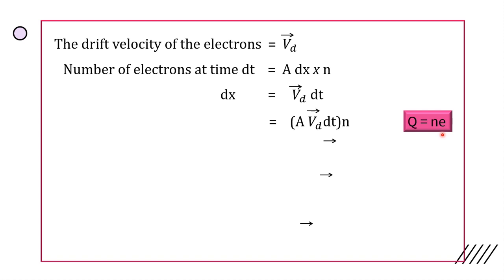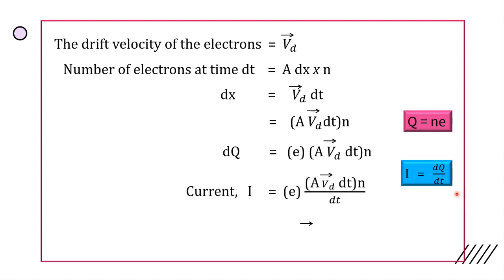That is equal to n times the fundamental charge. n times e is dq. In a time dt, the charge is dq. Now i is equal to dq by dt. Therefore, current i is equal to dq divided by dt.